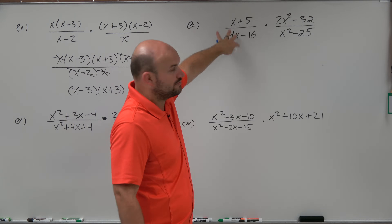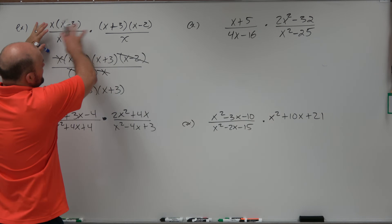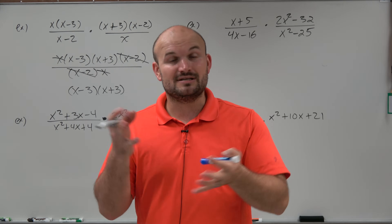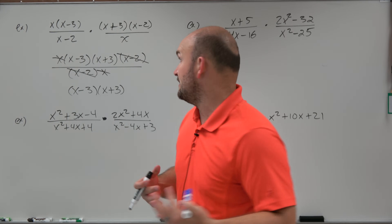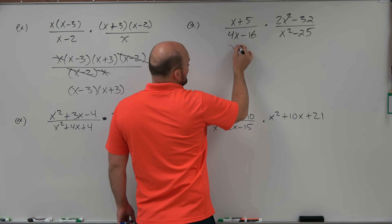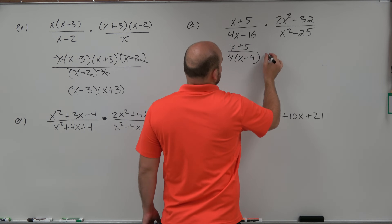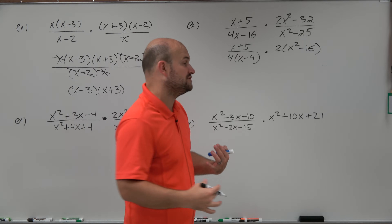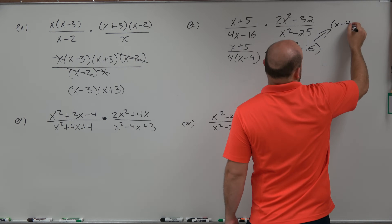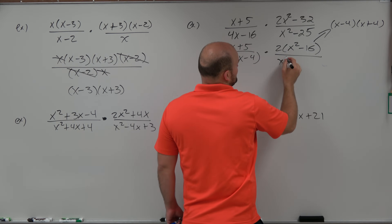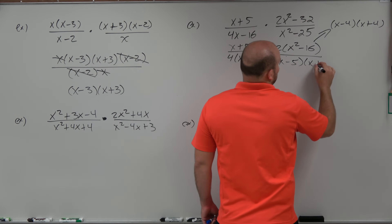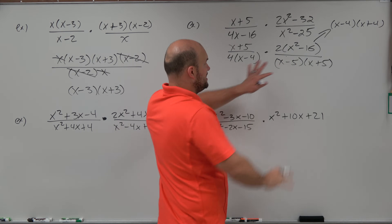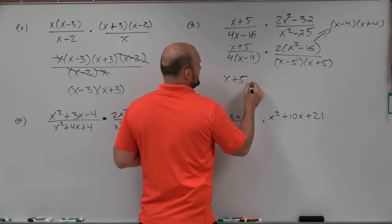In this next example, we have expressions that aren't already factored. So we want to simplify each expression first by factoring, then multiply. x plus 5 cannot be factored. Here I can factor out a 4, giving 4(x minus 4). Here I factor out a 2, leaving x squared minus 16, which is a difference of two squares: (x minus 4)(x plus 4). Over here, x squared minus 25 is (x minus 5)(x plus 5). Doing rational expressions will make you very good at factoring. Since there's still nothing exactly the same between expressions, I'll put them all together as one big fraction.